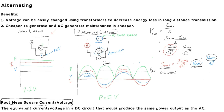There are two major benefits to using alternating current. First, we can use transformers to easily increase or decrease the voltage, which makes AC easier to transmit over long distances — important for a national electricity grid. Second, it is cheaper to generate and the generators are cheaper to maintain.